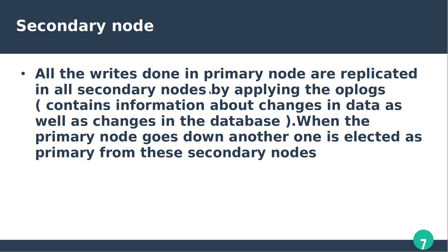Secondary nodes replicate all writes done in the primary node by applying the OPLogs, which contain information about changes in the data and the database. When the primary node goes down, one secondary node is elected as primary. The election uses voting and conditions: most recent update from the primary, latest timestamp and heartbeat status, history of connectivity of other secondary nodes, and user-defined priority.